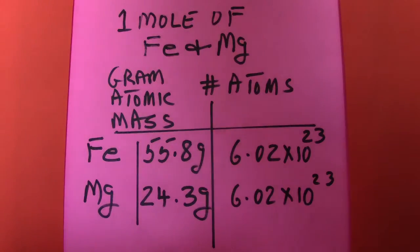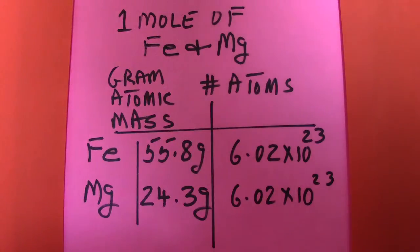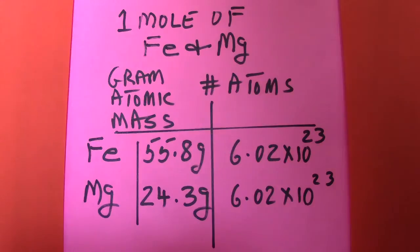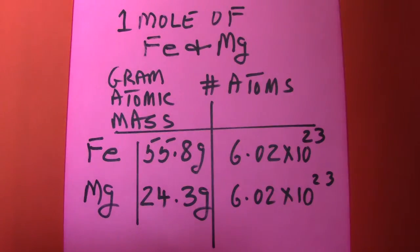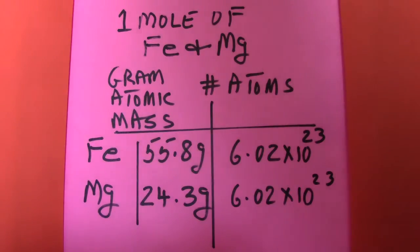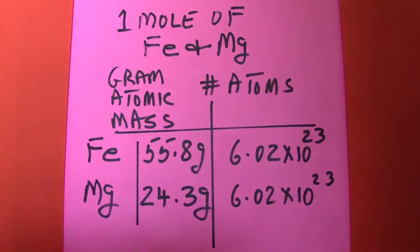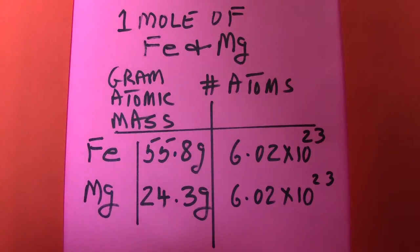Now even though one mole of iron and one mole of magnesium have the same number of atoms, they don't have the same mass because they are different elements. So to find the mass of one mole of these elements you have to go to the periodic table of elements and look up their atomic mass.